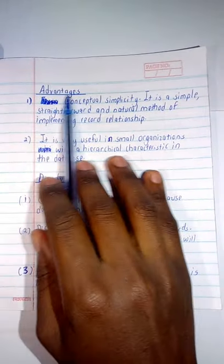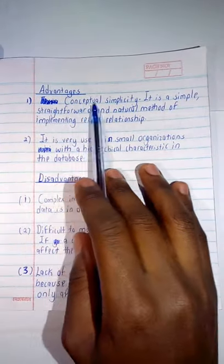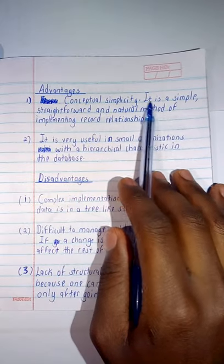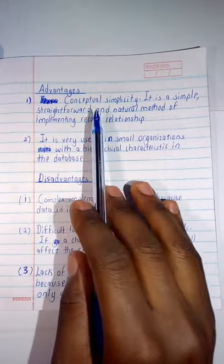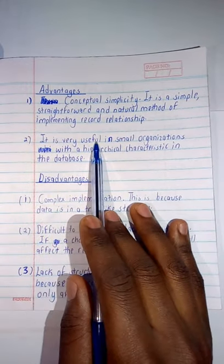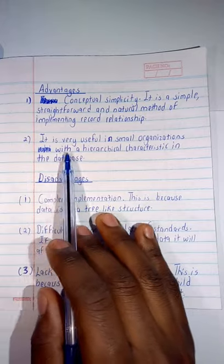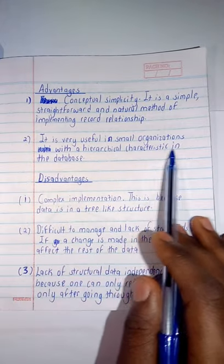Moving on, looking at the advantages of hierarchical: we're having conceptual simplicity, meaning it is a simple, straightforward, and natural method of implementing record relationships. Then it is very useful in small organizations with a hierarchical characteristic in the database.